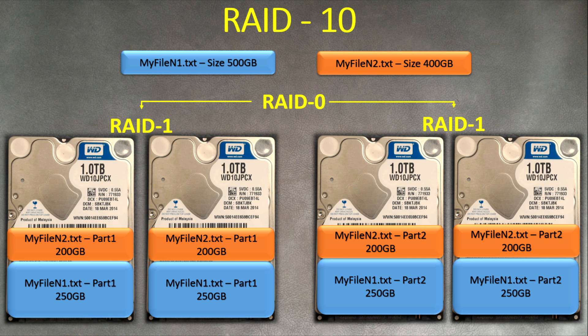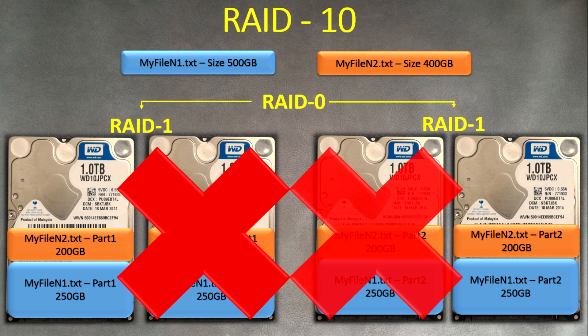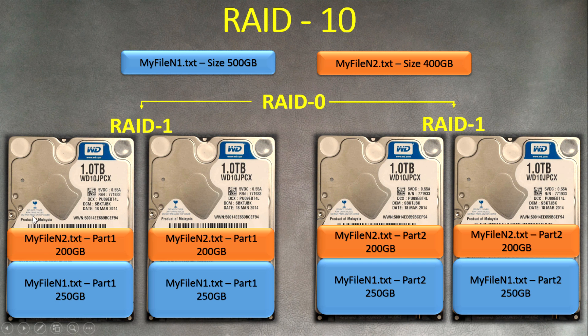RAID 10 also has great fault tolerance — it can support up to two disk failures at the same time, but with one limitation: the two failed disks must not be from the same mirrored pair. Let me show you: one disk fails and a second disk fails at the same time. As you can see, what remains still holds all parts of the files, so everything is available and no data is lost — you just need to replace those two disks.